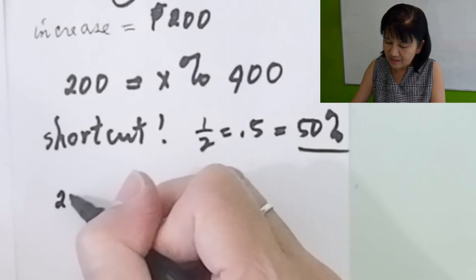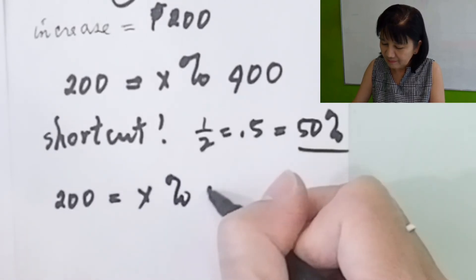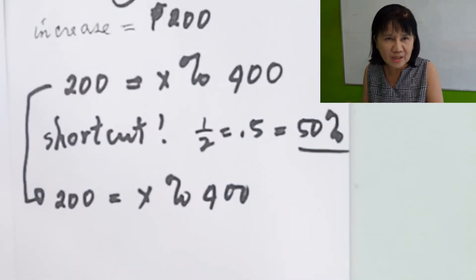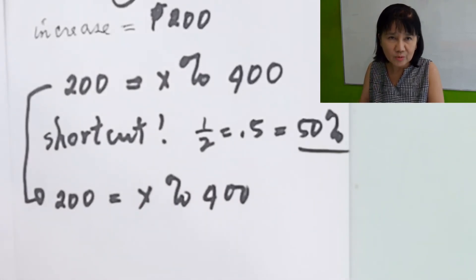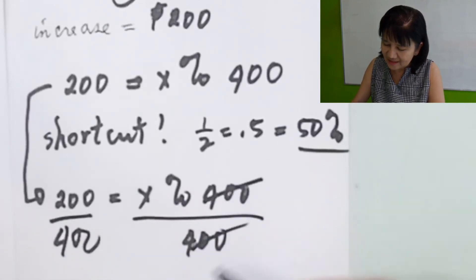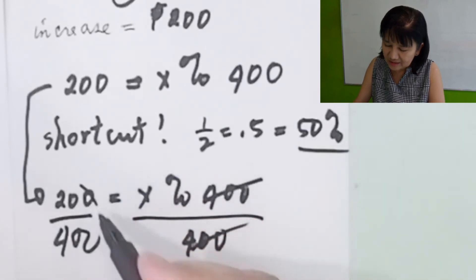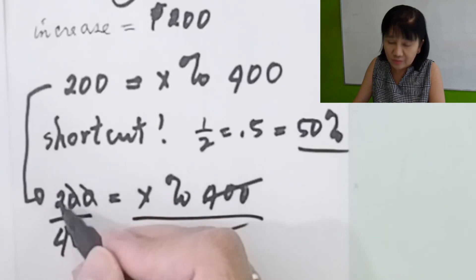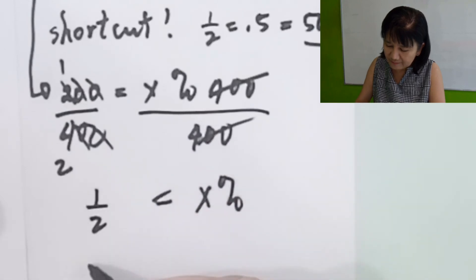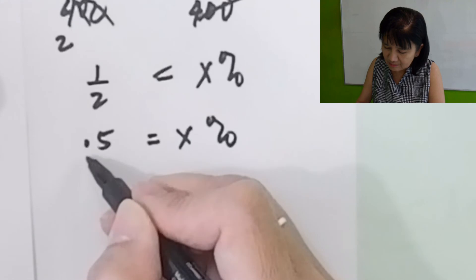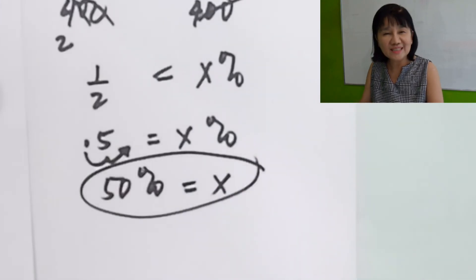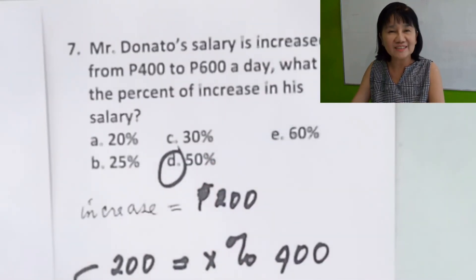If you didn't see that shortcut under time pressure, just proceed by dividing both sides by 400. Cancel the zeros, leaving 2 over 4. Simplify: 2 over 4 equals 1 over 2 equals 0.5. Move the decimal point two places to the right: 50% equals x. You get the same answer. The correct answer is letter D, 50%.